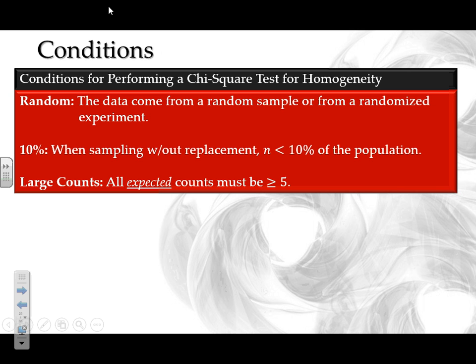To run the test we need to check conditions — and these are exactly the same as for the goodness of fit test. First: the data must come from a random sample or a randomized experiment. Second: the 10% condition — if sampling, we cannot sample more than 10% of our population; if experimenting, we don't need the 10% condition. Third: large counts — all expected counts must be greater than or equal to 5.